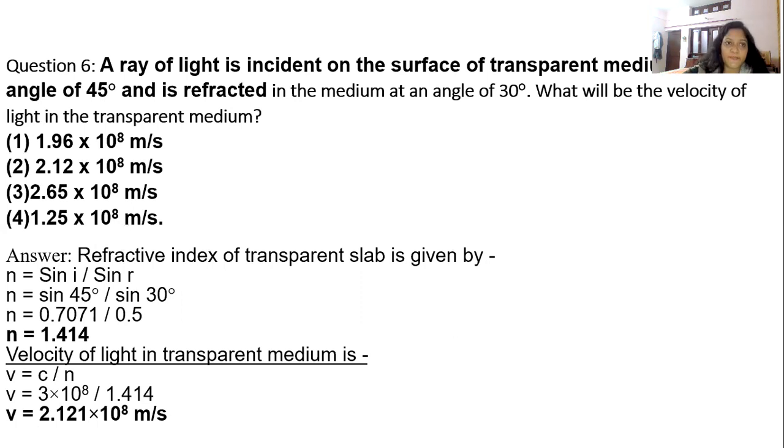Question number 6. A ray of light is incident on the surface of transparent medium at an angle of 45° and is refracted in the medium at an angle of 30°. What will be the velocity of light in transparent medium? There are 4 options. Go for the answer.